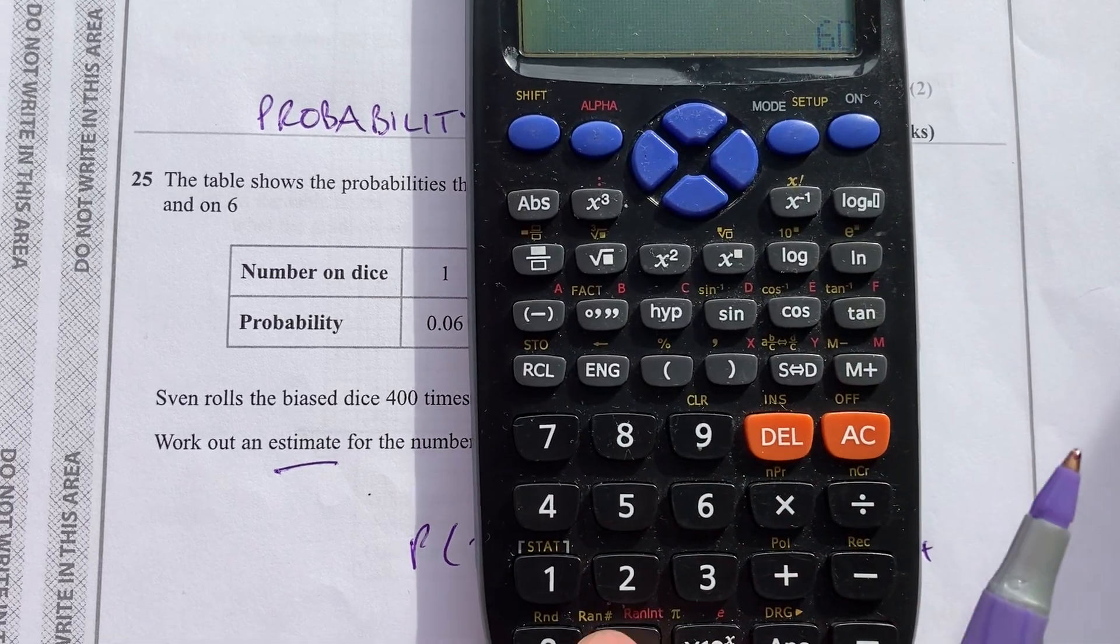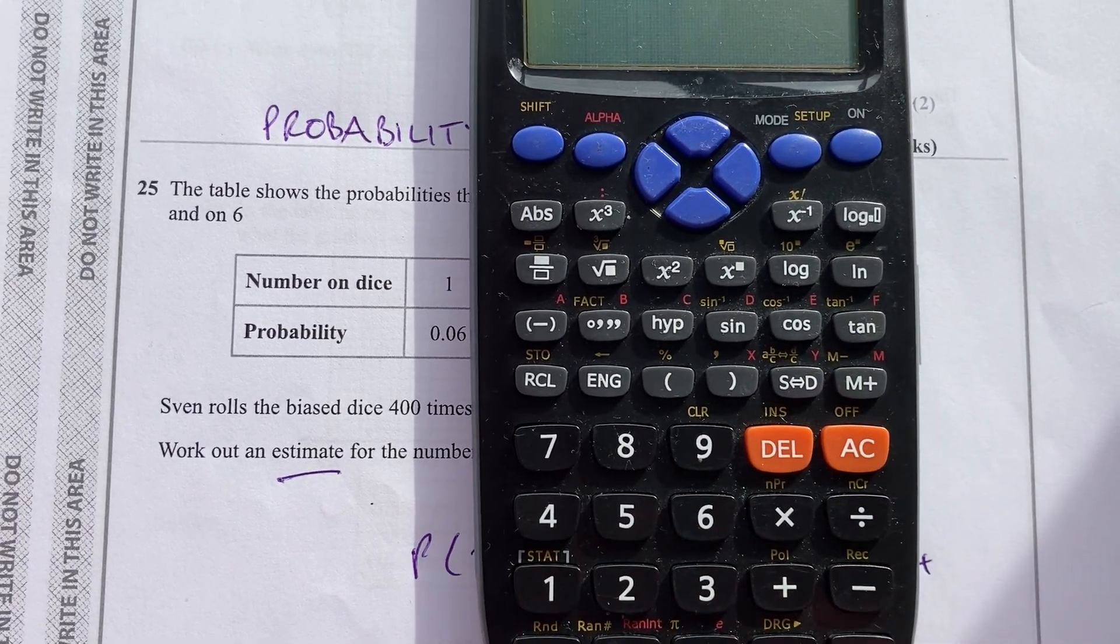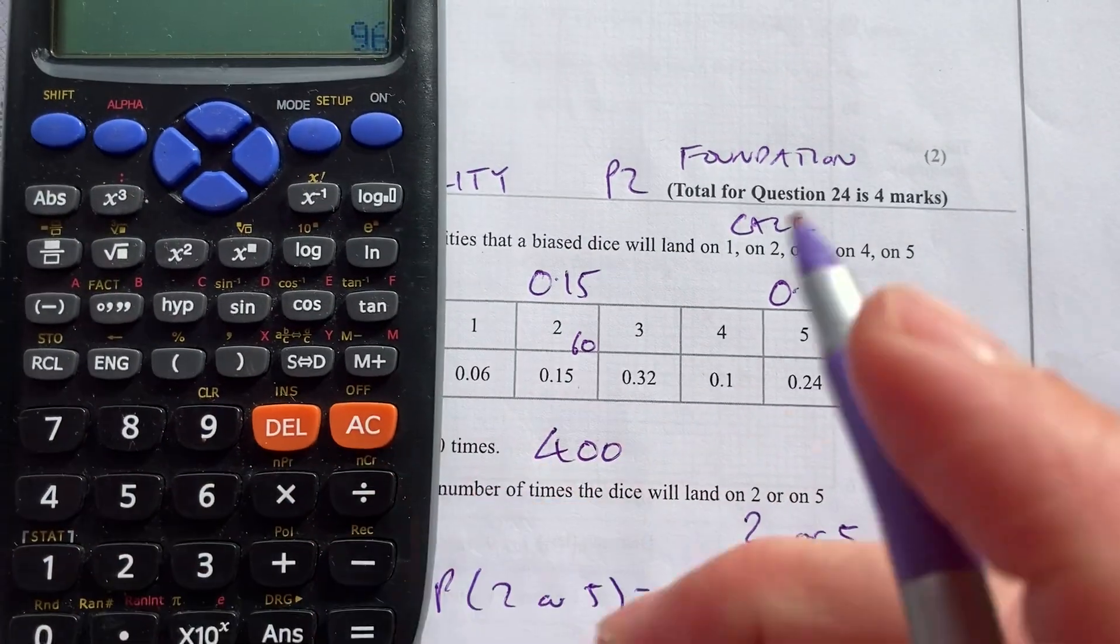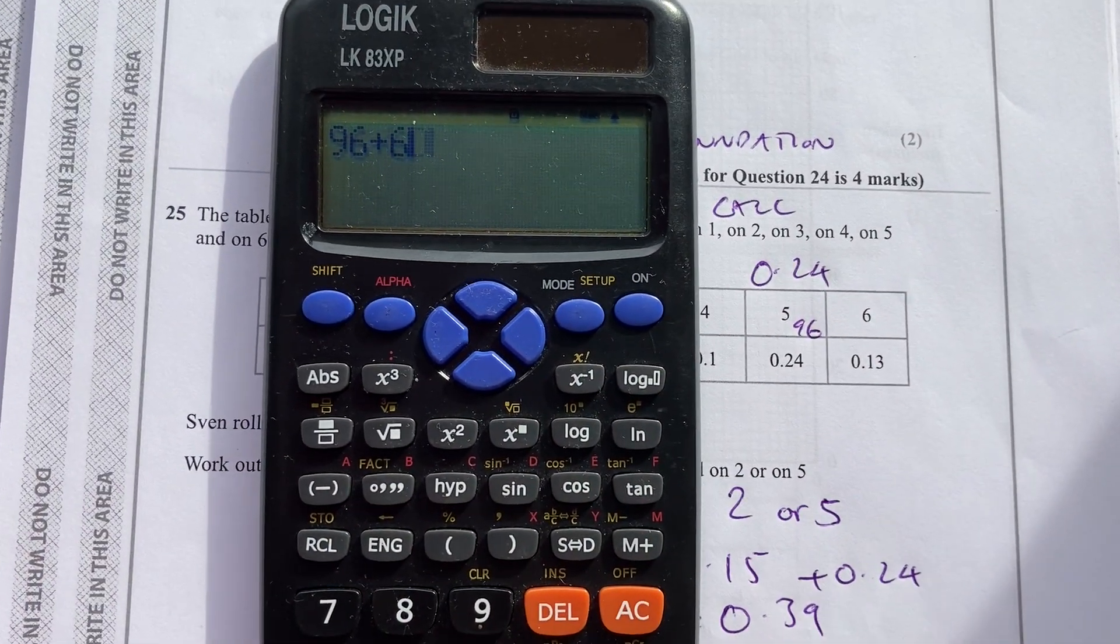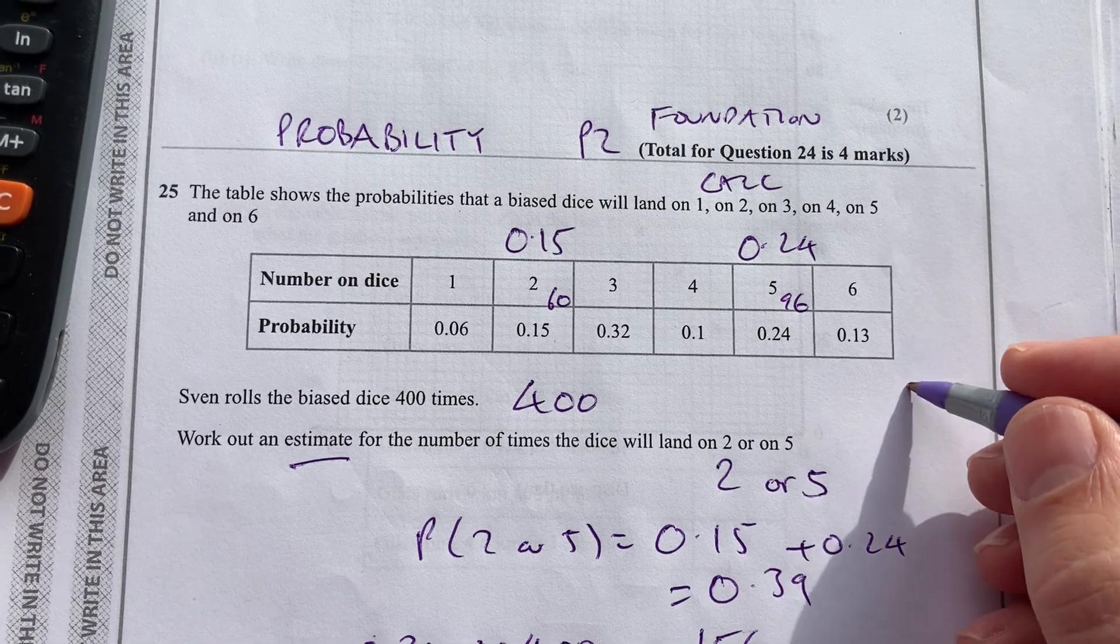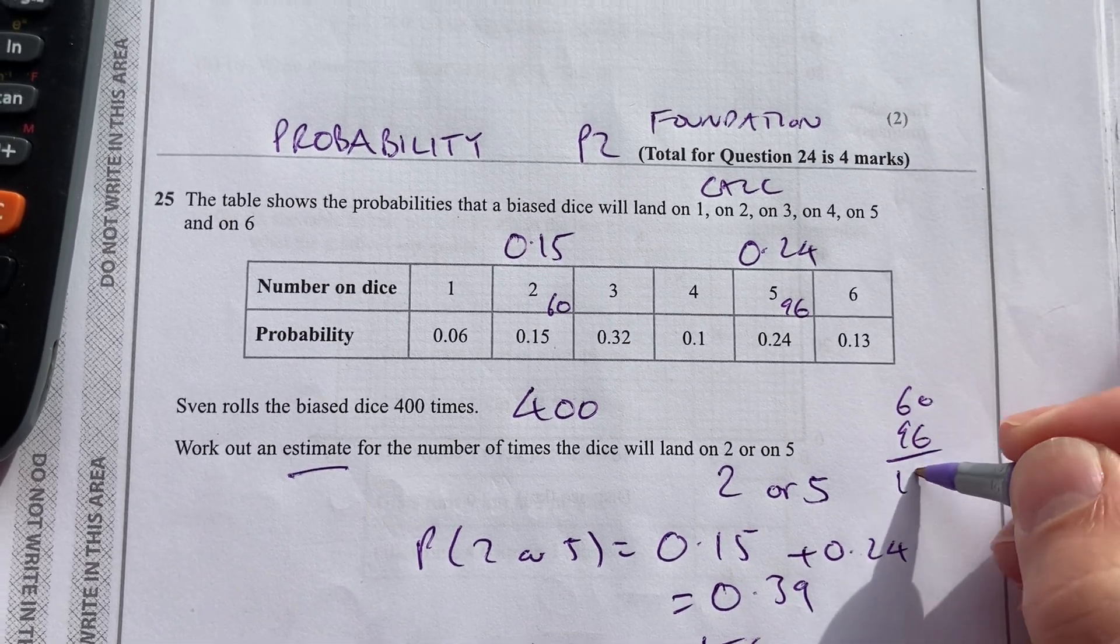And 0.24 times 400, and 96. And then added 96 plus 60 to get 156.